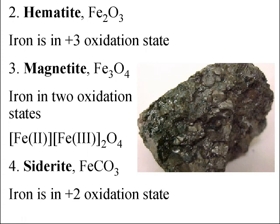Second is hematite, Fe₂O₃, where iron is in the +3 oxidation state. Third is magnetite, Fe₃O₄. Since four oxygens are −8 total and three does not divide evenly into eight, the iron is present in two oxidation states: +2 and +3. Last is siderite, which is iron carbonate. Since carbonate is −2, iron is in the +2 oxidation state.